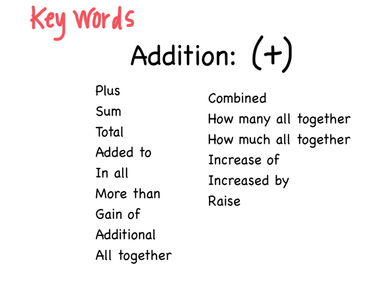Alright, so your first screenshot that you're going to want to take are the addition keywords. You can see the list. When you see these words, they mean that you're most likely going to be adding. A couple key ones that maybe you even want to put stars by are sum, total, and all together. Those are some key ones that you're going to see quite a bit.